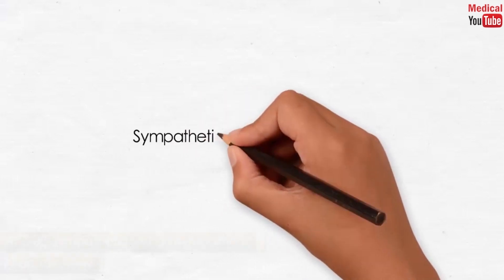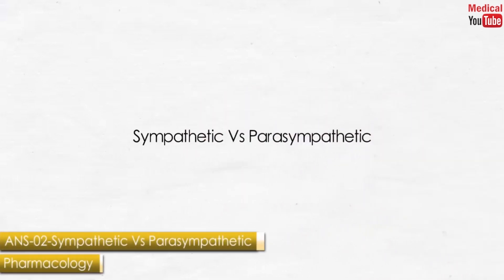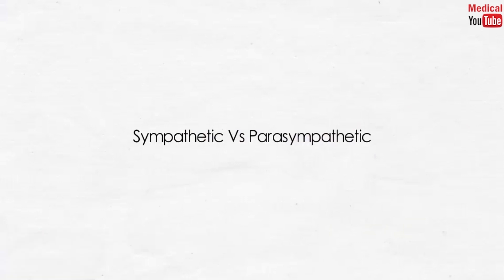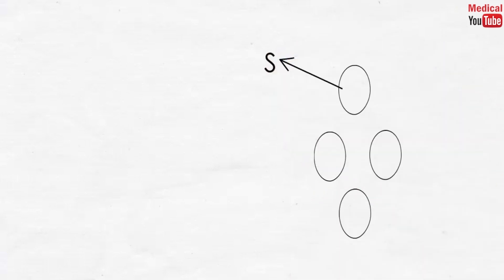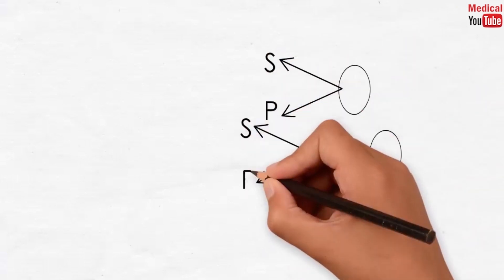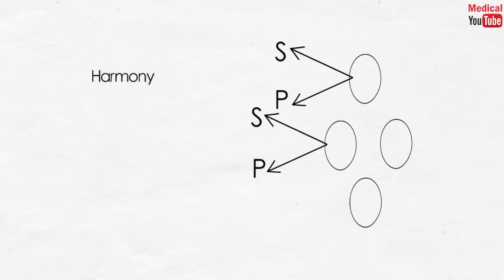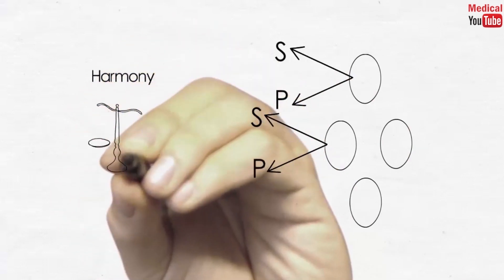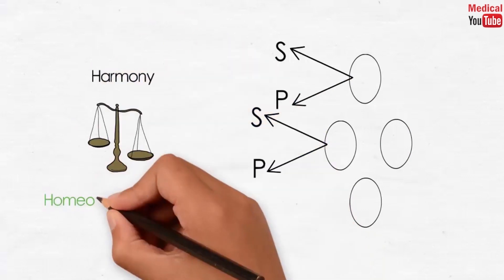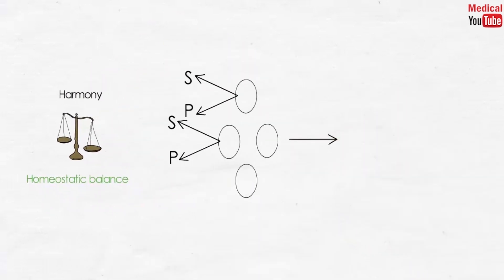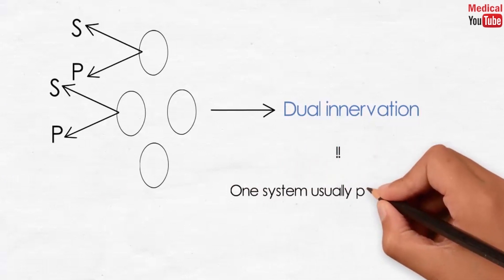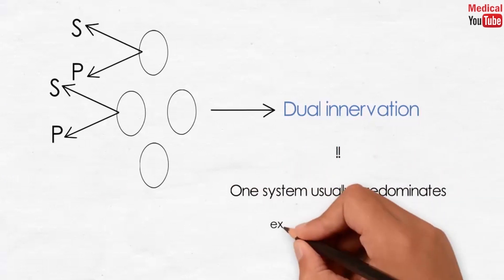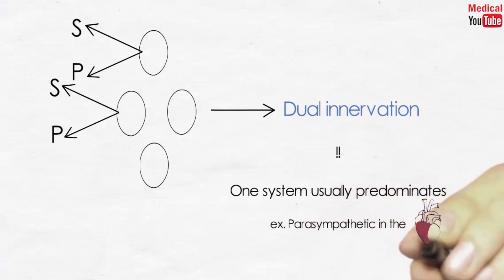In this lesson we'll discuss the actions of the sympathetic and parasympathetic nervous system. Most organs are innervated by both divisions of the ANS — sympathetic and parasympathetic. They work in harmony together, keeping homeostatic balance through their opposite actions on the body. This is called dual innervation. Despite this dual innervation, one system usually predominates in controlling the activity of a given organ — for example, in the heart, the parasympathetic division is the predominant factor for controlling rate.